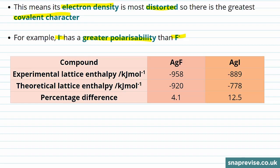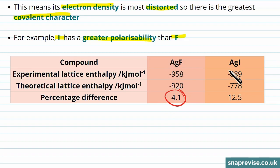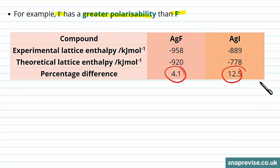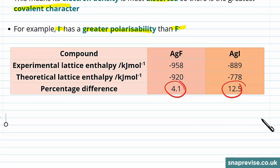As we expect, fluoride ions, which are smaller, have a 4.1% difference when they're in a compound with silver, whereas when iodide ions are in a compound with silver, we have a 12.5% difference between the experimental and the theoretical predictions for lattice enthalpy.